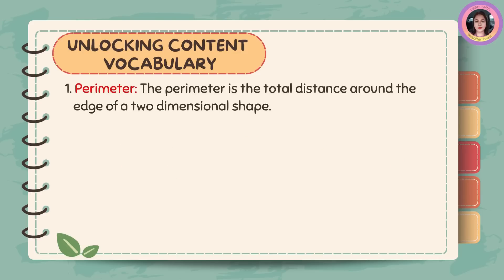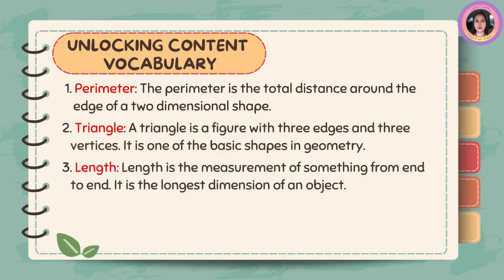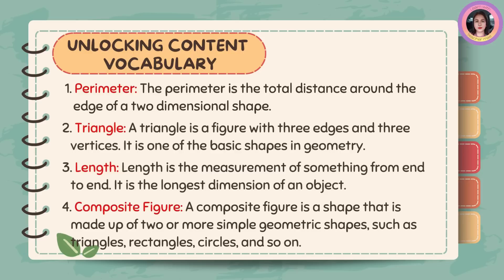Perimeter — the perimeter is the total distance around the edge of a two-dimensional shape. Triangle — a triangle is a figure with three edges and three vertices; it is one of the basic shapes in geometry. Length — length is the measurement of something from end to end; it is the longest dimension of an object. Composite figure — a composite figure is a shape that is made up of two or more simple geometric shapes, such as triangles, rectangles, circles, and so on.